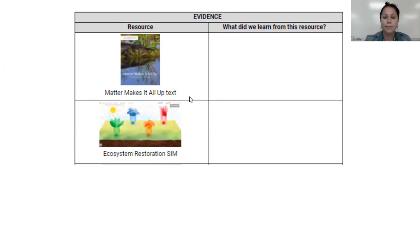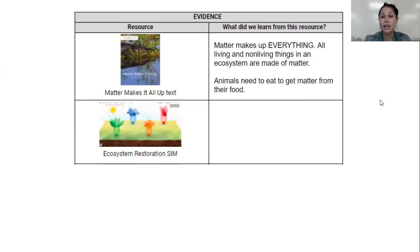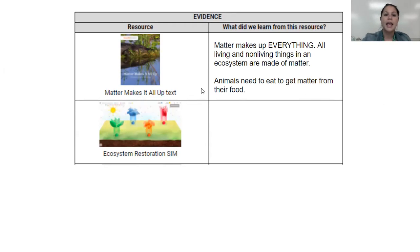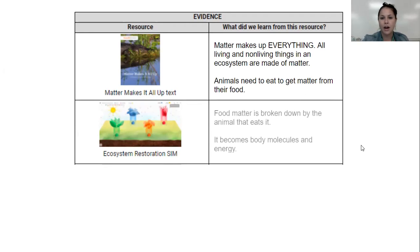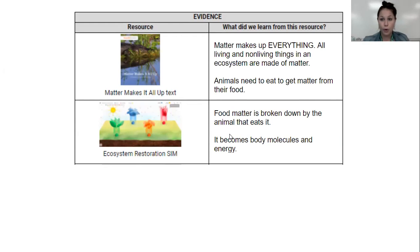In the book Matter Makes It All Up, we've learned that matter makes everything — all of the living and non-living things in an ecosystem are made of matter, and animals need to eat to get matter from their food. In the ecosystem restoration simulation, we saw that food matter is broken down by the animal that eats it. The matter moves from leaves to the rabbits to the wolves — it's broken down and it becomes body molecules for the animal to grow and energy for that animal to move and thrive.